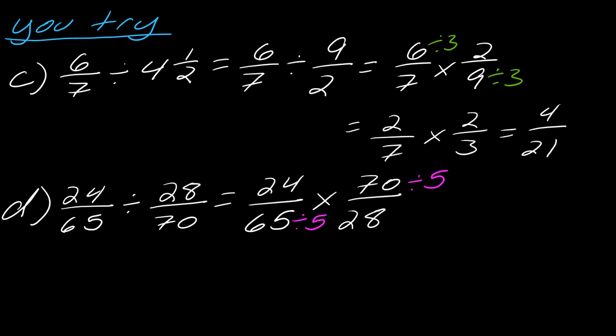And, then, between the 24 and the 28, those are both divisible by 4. So, let's go ahead and do all of this division. So, 24 divided by 4 is 6. 65 divided by 5 is 13. 70 divided by 5 is 14. And, 28 divided by 4 is 7.